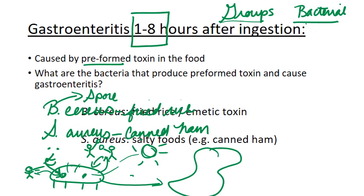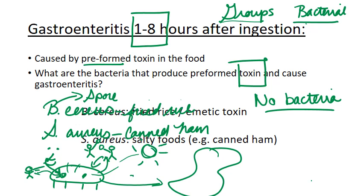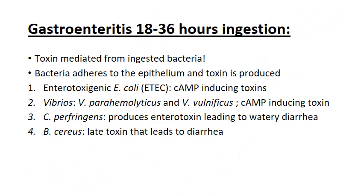The key point is that these gastroenteritis are not due to the vegetative bacteria — both B. cereus and S. aureus vegetative bacteria would die in our stomach acid. It's the toxin that's making us sick, and that's why it hits so quickly. Toxins are tasteless and odorless — they're silent killers. So: preformed toxin, one to eight hours after ingestion — think B. cereus and S. aureus.